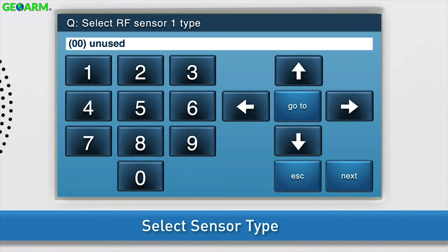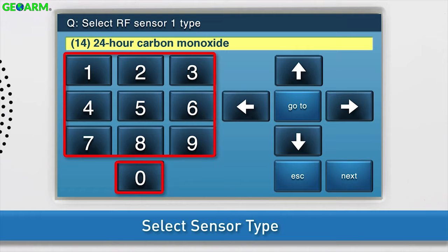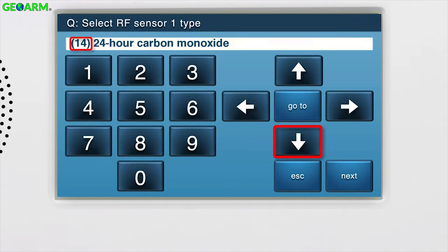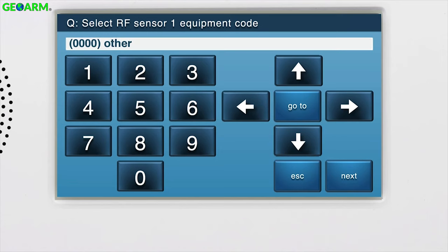Select the sensor type. There are two ways to change the sensor type. Option 1: Press the right arrow until 24-hour carbon monoxide displays in the answer box. Option 2: Use the on-screen keypad to type in 1, 4, which is the two-digit code for the 24-hour carbon monoxide sensor type. Press the down arrow to go to the next sub-question.